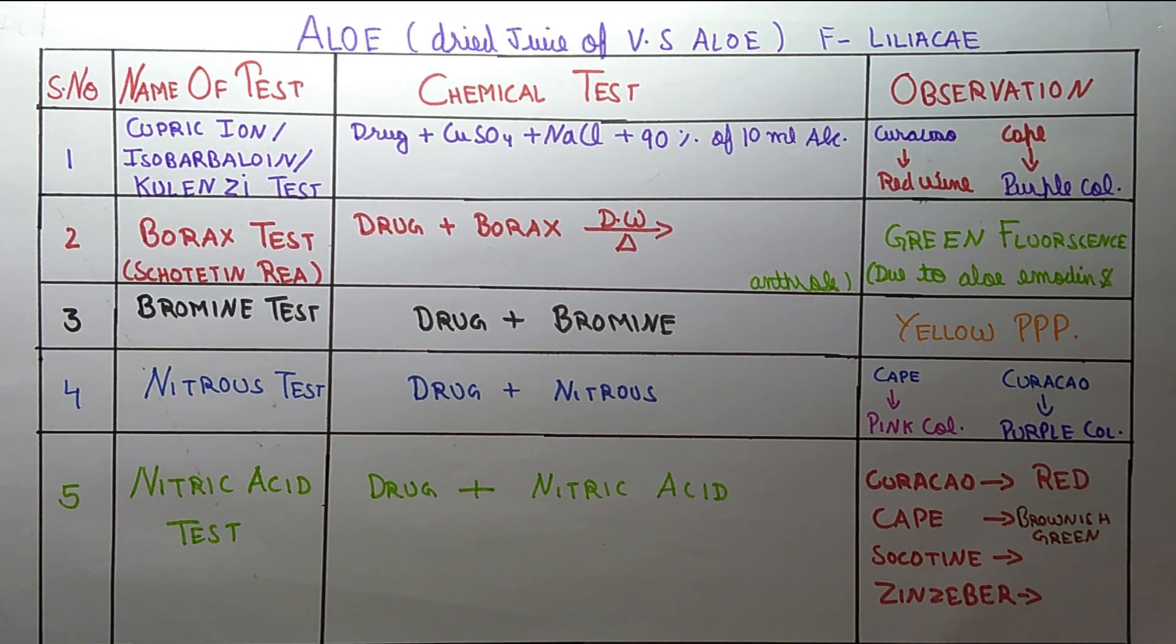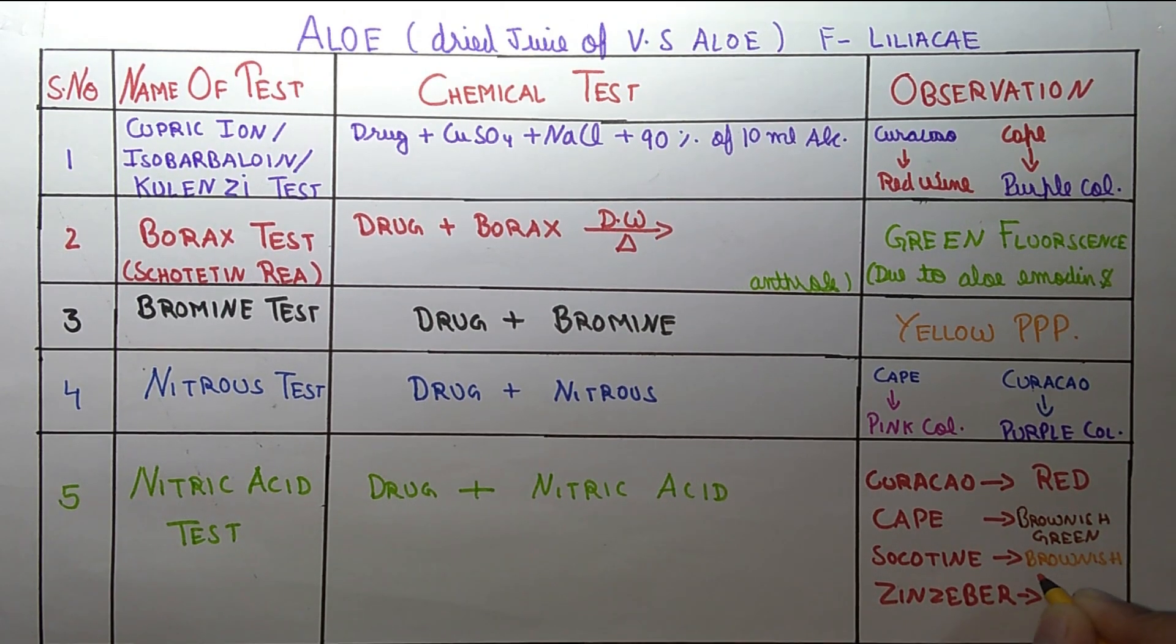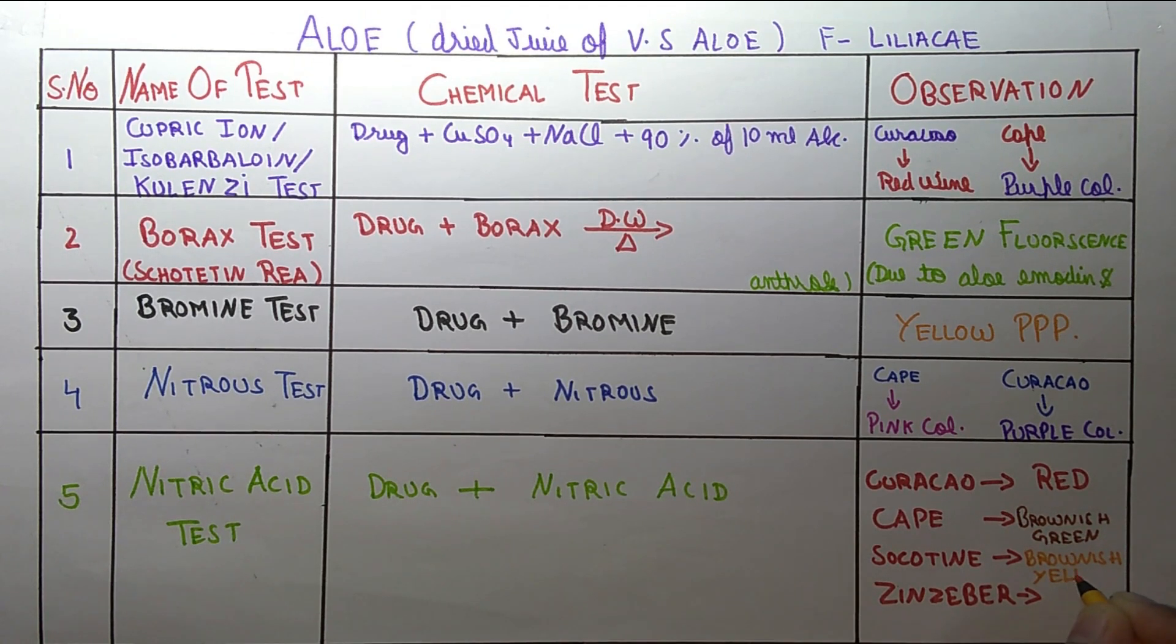Scotatin gives brownish yellow color, and Gingyber gives yellow color or NY yellow.